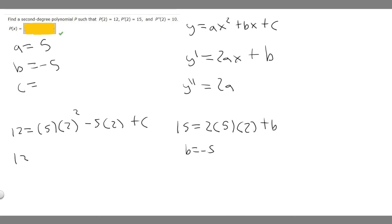So 12 = 2² times 5 - 2² is 4, times 5 is 20, minus 5 times 2 is -10, plus c. Combining like terms, 12 = 20 - 10 is 10, plus c. Subtracting 10 from both sides, we get c = 2.